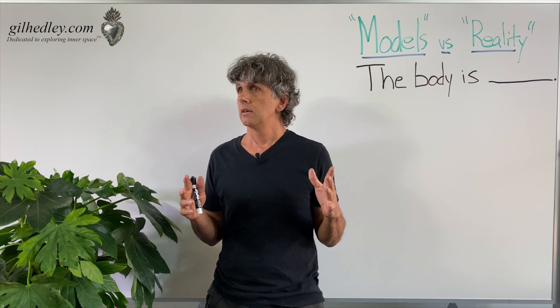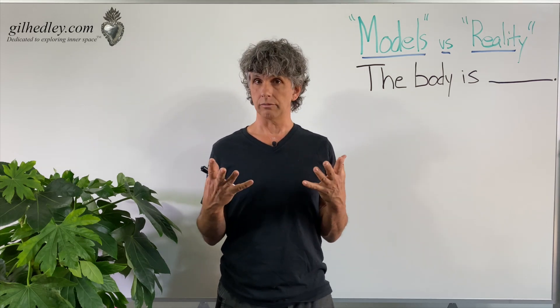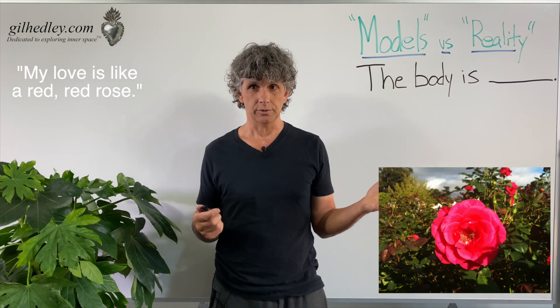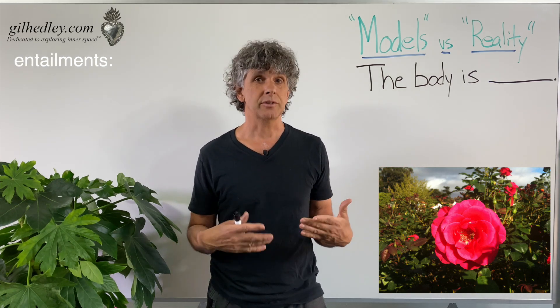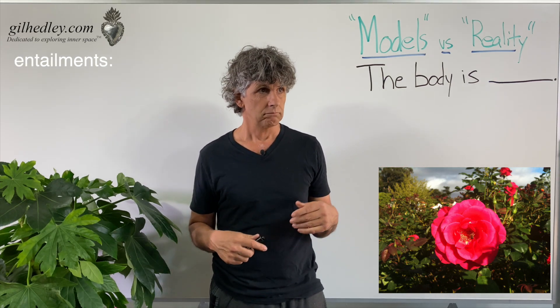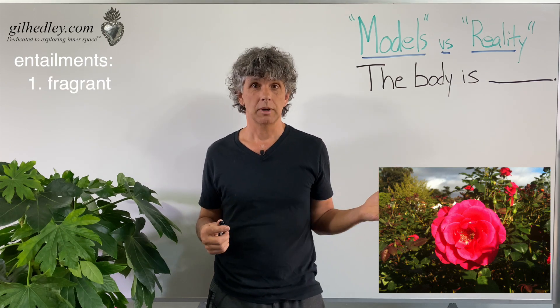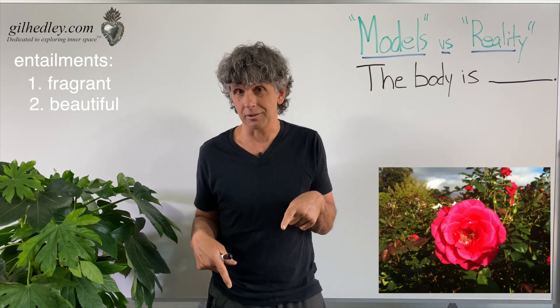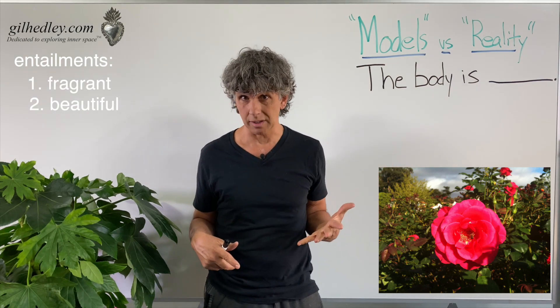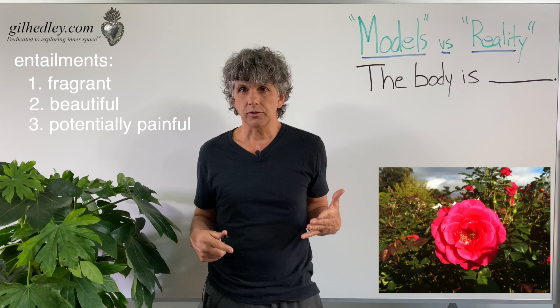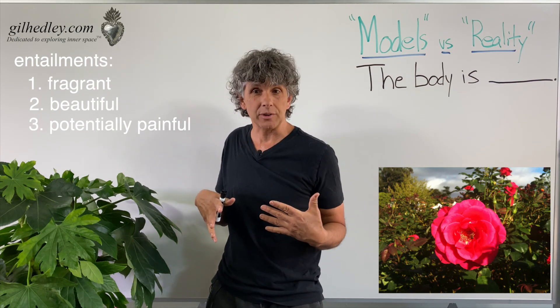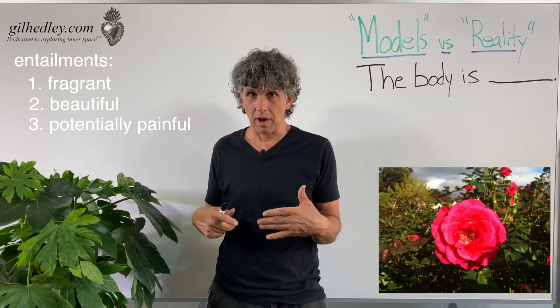Let's say a model for love: "My love is like a red, red rose." Well, there are entailments to that model. My love is fragrant. My love is beautiful. And if you handle it the wrong way, you're going to bleed. So those are kind of the entailments of the model.